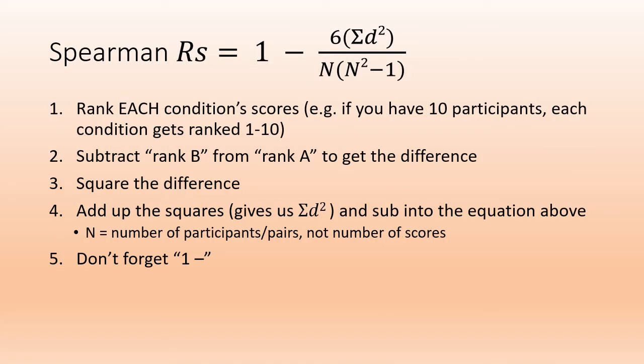Next up is Spearman, another complicated equation, although hopefully a simple result. First of all, rank each condition's scores separately—not all together for this one. If you've got 10 participants, then rank them separately for each condition. Then subtract rank B from rank A, doesn't matter which way around you do it, to get the difference.